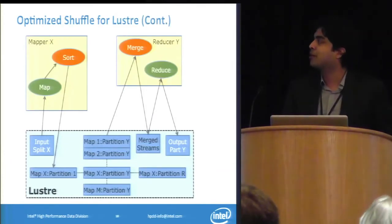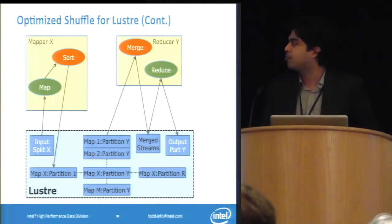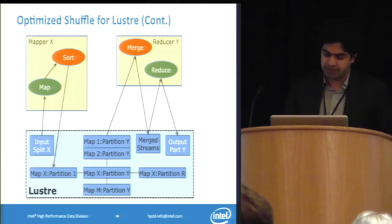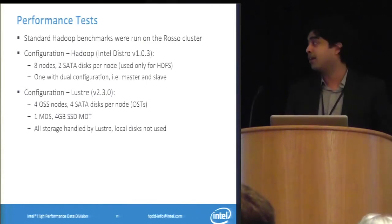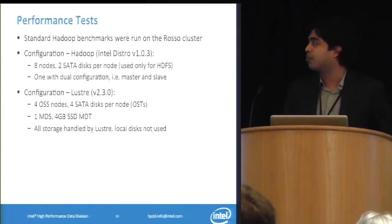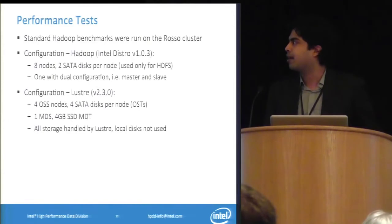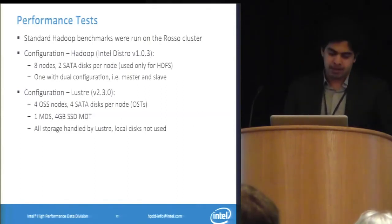It looks much simpler now — the mapper outputs each partition into a separate file, and then the reducer reads it. We ran some performance tests, pretty small scale — just eight Hadoop nodes, four OSSs with four disks attached. To have a fair comparison, we kept the number of disks the same: each of the eight nodes had two SATA disks, making 16 disks total, with a similar 16-disk configuration for Lustre.